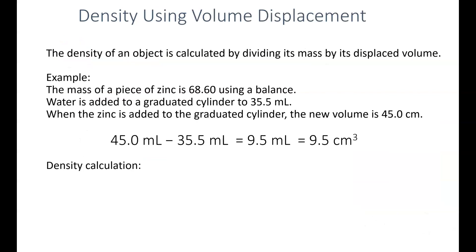When we're trying to find the density using volume displacement, we calculate it by finding the mass and dividing by the displaced volume. For example, if I have a 68.60 gram sample of zinc, I would find that using a balance. I could add water to a graduated cylinder until it's 35.5 milliliters. I add the zinc to the cylinder, so the new volume is 45.0 milliliters.